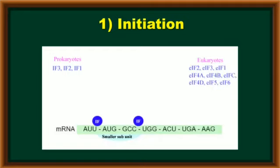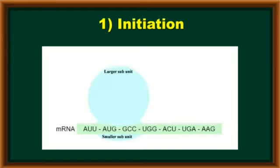But in eukaryotes, 9 types of initiating factors are present, like EIF2, EIF3, EIF1, EIF4A, EIF4B, EIF4C, EIF4D, EIF5, and EIF6. These 9 initiating factors are present in eukaryotic cell for initiation. With the help of these initiating factors and magnesium ions, the larger subunit of ribosome attaches to mRNA. Now it forms the ribosomal complex.